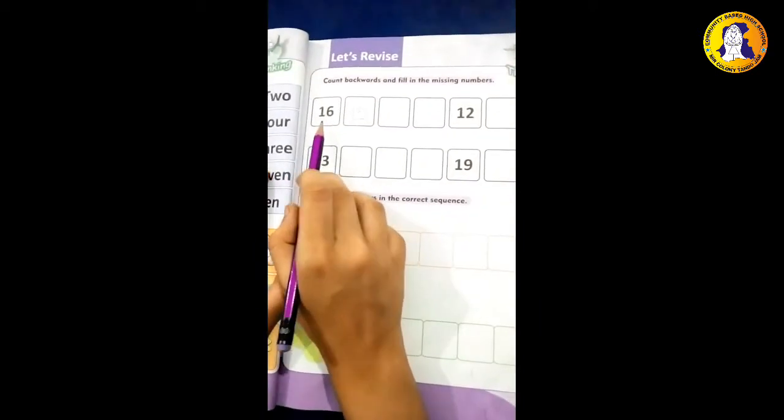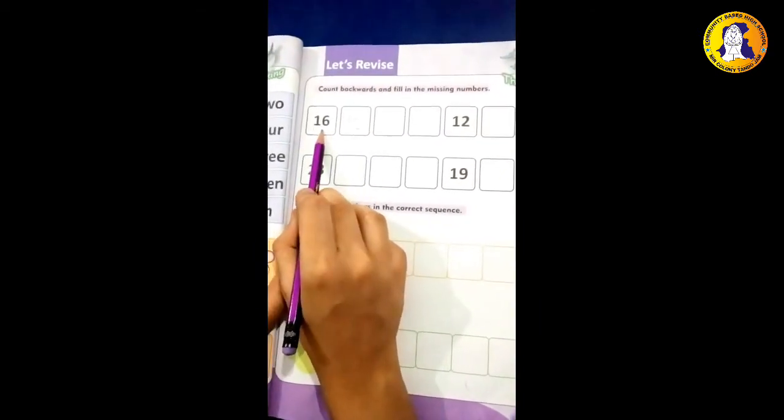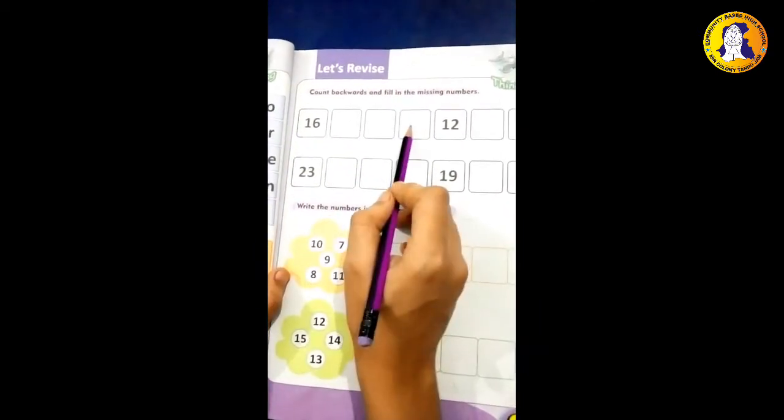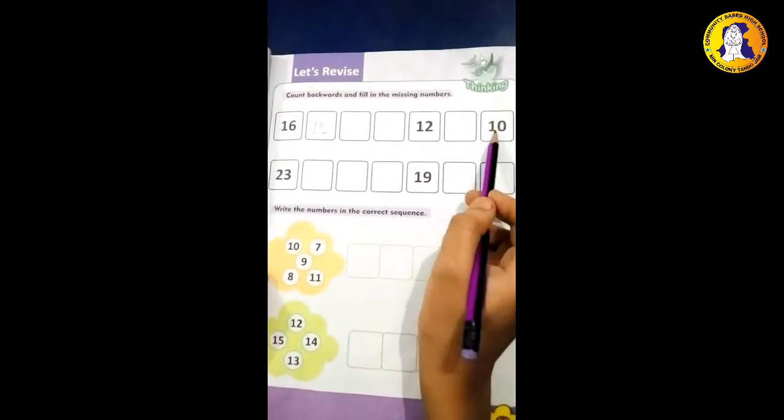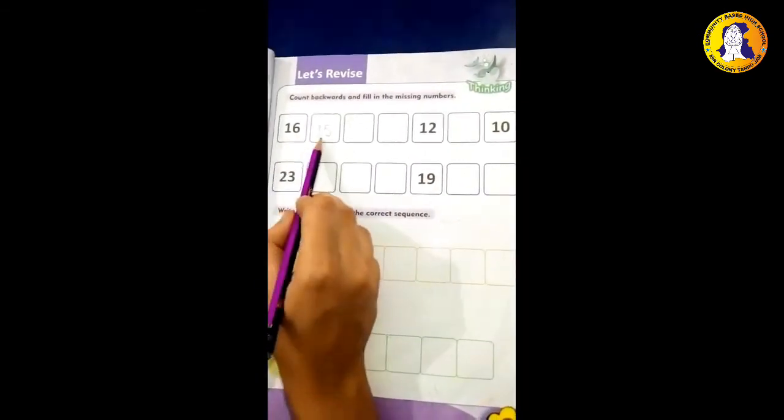So kids, backwards means this is the counting: 16, 15, 14, 13, 12, 11, 10. As I have written 15, so you will fill missing missed blocks.